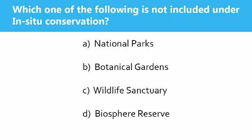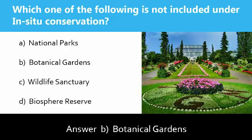Next question: Which one of the following is not included under in-situ conservation? Options: national parks, botanical gardens, wildlife sanctuary, biosphere reserve. The answer is botanical gardens. In-situ conservation means on-site conservation — that is, conservation of species in their natural surroundings.